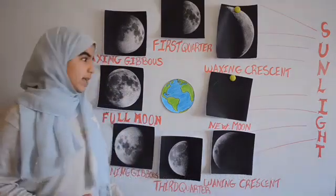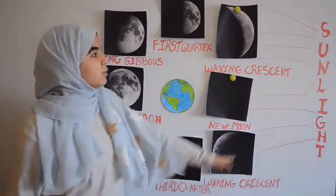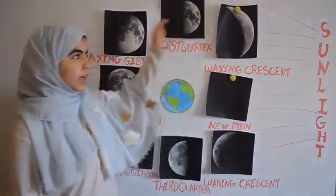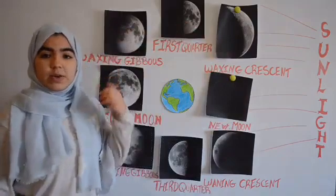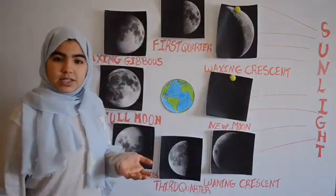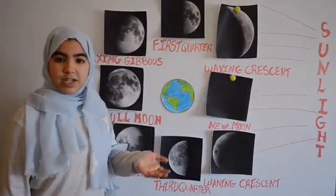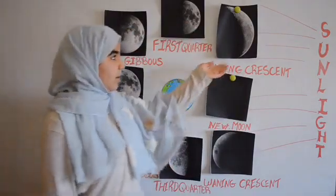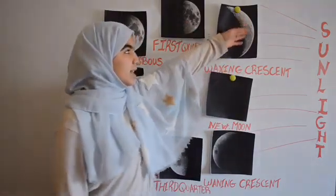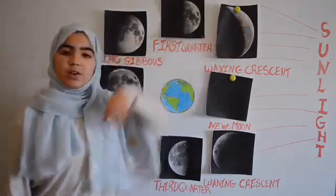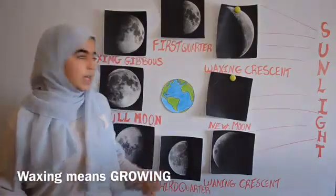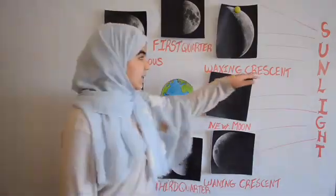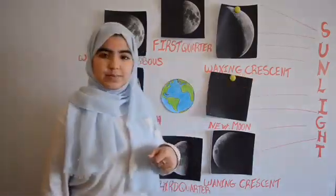After a few days, once the moon has moved along in its orbit, we can begin to see some of its lit up side from earth. What we see now is just a thin slice of light called a crescent. We call it a waxing crescent.